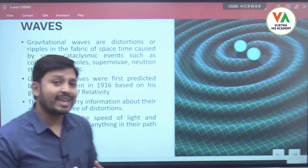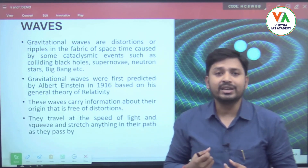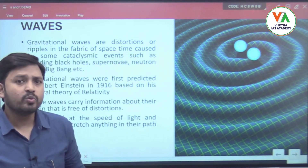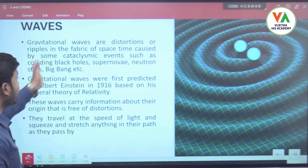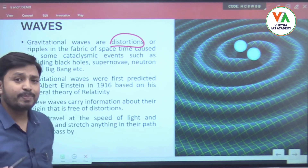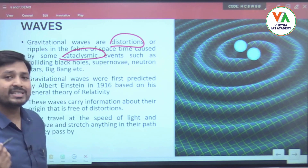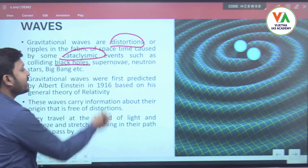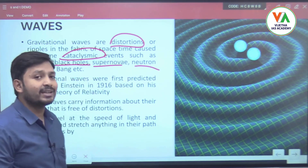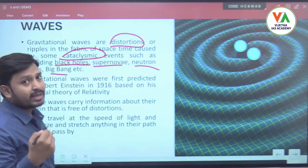When we place any instrument in the path of these traveling waves, it can observe and measure them. Gravitational waves are vibrations or distortions in the space-time fabric caused by cataclysmic events such as black hole mergers, supernova explosions, neutron star collisions, or events related to the big bang.